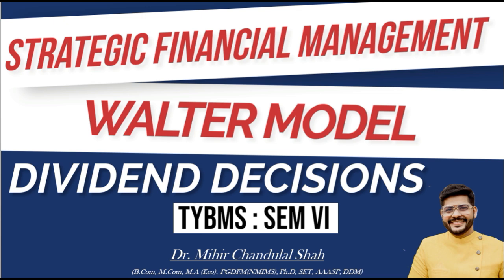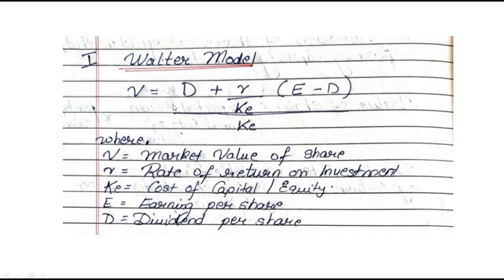So let us see one by one all the formulas. Under Walter's model, the main formula is where we are going to find the value of shares: V equals D plus R upon KE into E minus D, upon KE. Where V stands for the market value of the share, R is the rate of return on investment, KE is the cost of capital, E is the earning per share, and D is the dividend per share. This is the main formula, and I would like everyone to note it down because in each and every sum, this is the formula we'll apply.